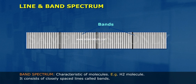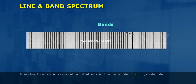Band Spectrum is characteristic of molecules. Example: H2 molecule. It consists of closely spaced lines called bands. It is due to vibration and rotation of atoms in the molecule.